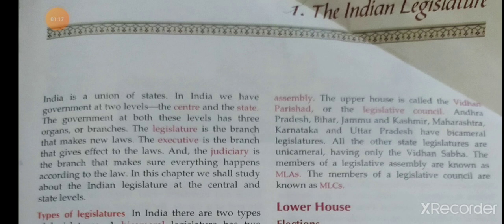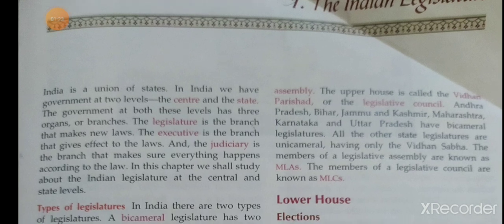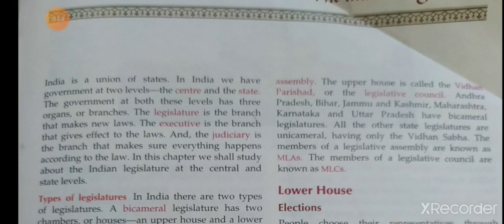The lawmaking body is called the legislature — it is the branch that makes new laws. The executive is the branch that gives effect to the laws. And the judiciary is the branch that makes sure everything happens according to the law.